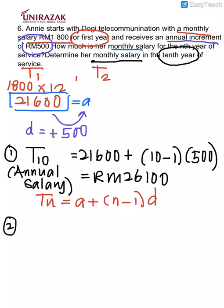But the question clearly states they want us to find the monthly salary on tahun kesepuluh, on the tenth year. So to get the monthly salary, I just take this annual salary on the tenth year and I divide dengan dua belas. So when I do the division, I'm going to get...